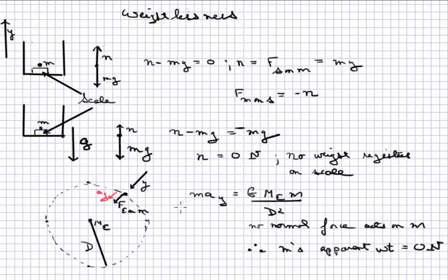So Newton number two in the y direction, I'm drawing y radially downward at this instant, radially downward from where m is in its orbit towards the center of the earth, is by the law of gravitation equal to big G times the mass of the earth times m divided by the separation distance squared. There is no normal force acting on m. This is the only force acting on m. And therefore m's apparent weight is also zero newtons.